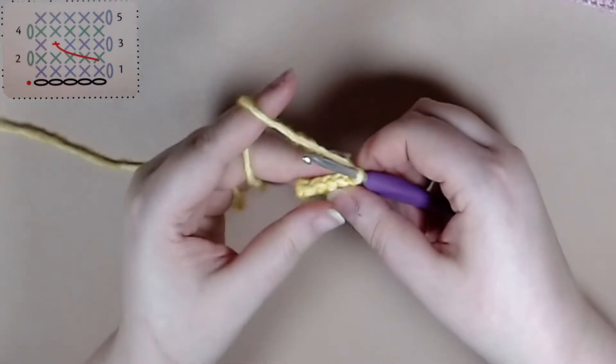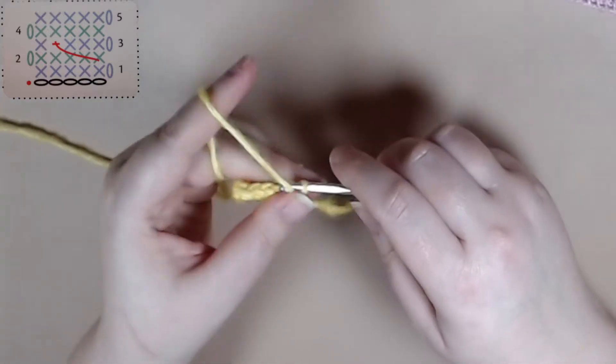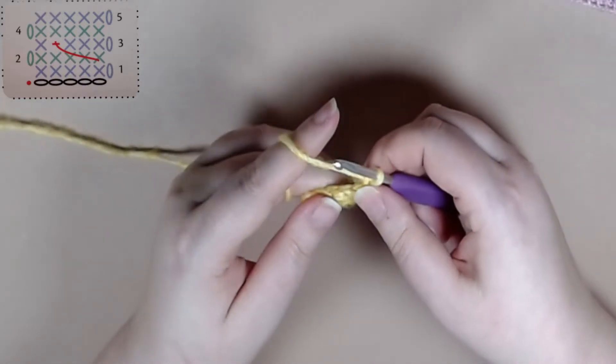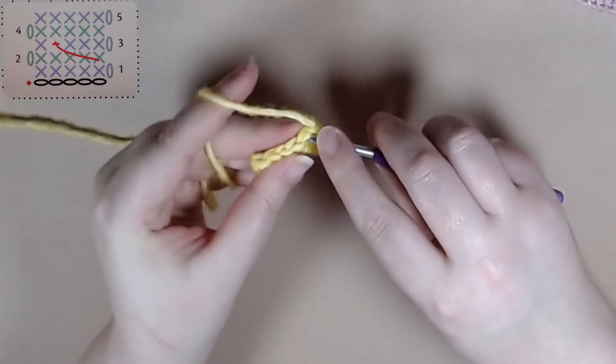Alright, we're going to turn our work and chain one and for row two we're just going to single crochet again all the way until the end of the row.